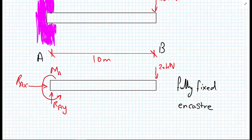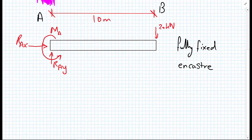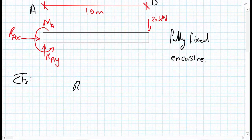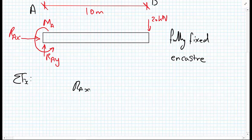First of all we'll do the sum of the forces in the X direction, and that must be equal to zero. So looking at our free body diagram, we have R_AX equals zero. No other X forces on the system.